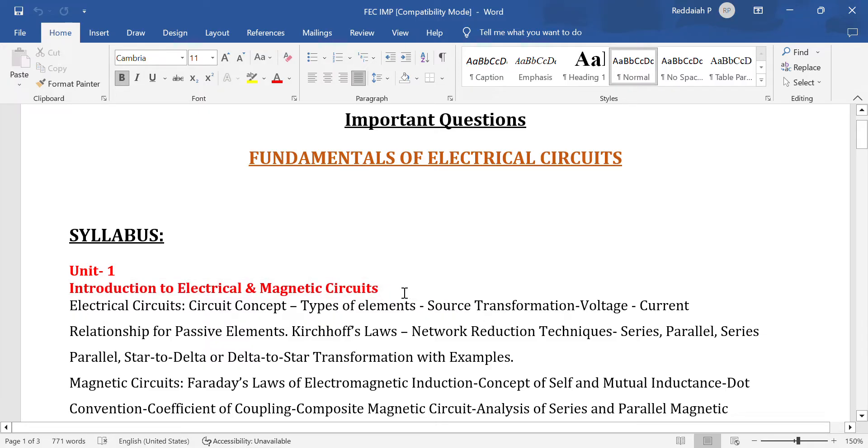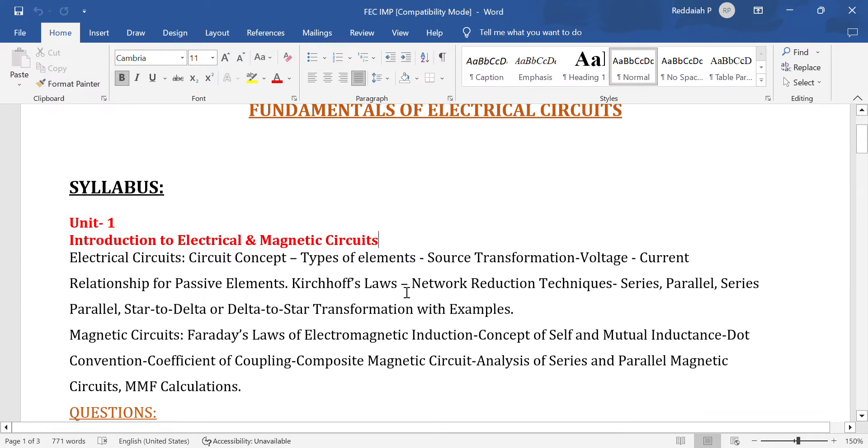Electrical circuit concept covers types of elements. There are two types: active elements and passive elements. Active elements means voltage source, current source. Examples include voltage sources and current sources like batteries, EMF. Those give energy - active elements.